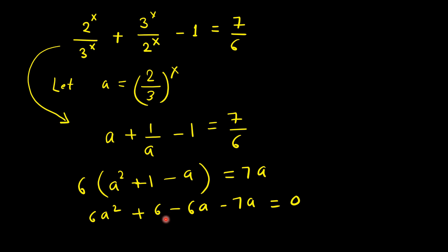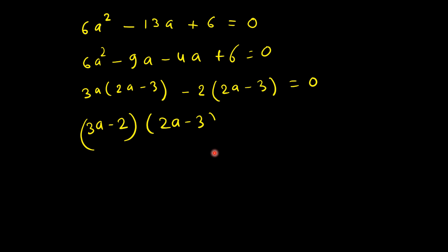We can further break it and now it's 6a² - 13a + 6 = 0. Let's rewrite it.